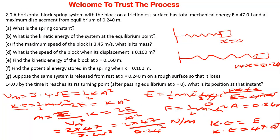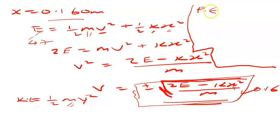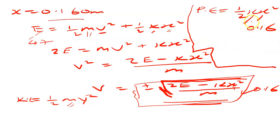Let's go to part F. Part F is saying: find the potential energy stored in the spring when x equals 0.160 meters. The potential energy is given by one-half Kx squared. We already know the value for K and the value of x is 0.16. The value of K is from part A, and the value of x is given. Just plug in the values and calculate — the answer will be in joules.